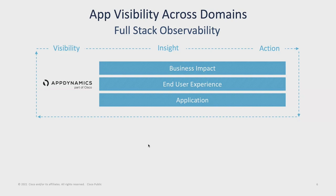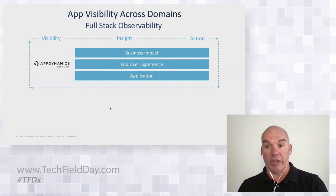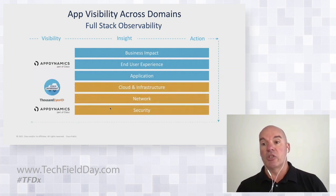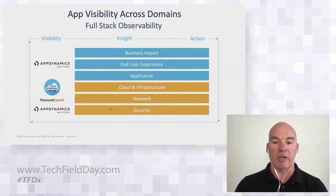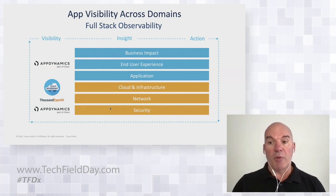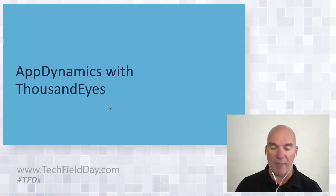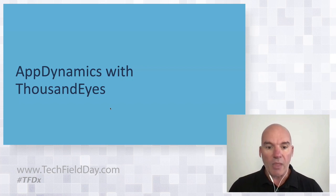We help the application teams understand how upstream issues impact things — you can see how a code break affected user experience and caused payments to drop. That's what we call ourselves: an application business-centric BU. As part of Cisco, we're expanding into other areas. You just saw our integration with ACI in the networking domain. We also have an integration with Intersight, our cloud and infrastructure BU. Later on, you'll see how we're bringing the security domain into AppDynamics. Right now, we're going to double down on the networking side and show our integration with ThousandEyes.